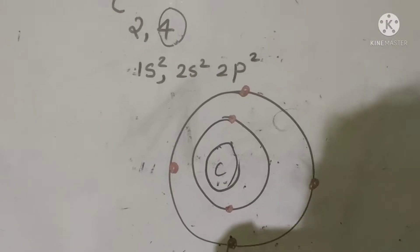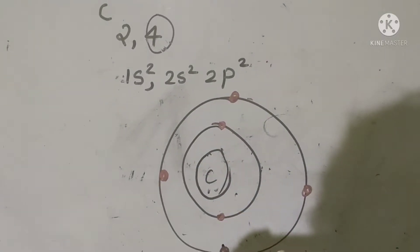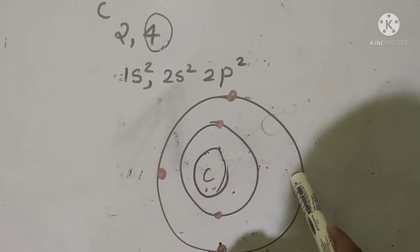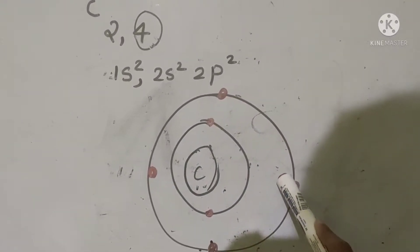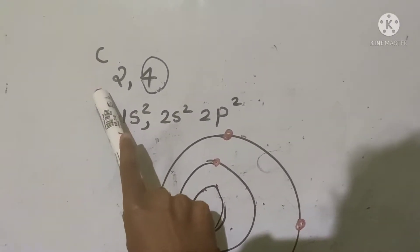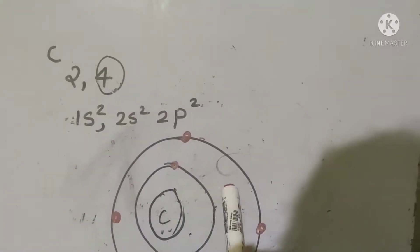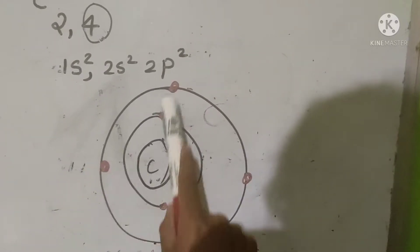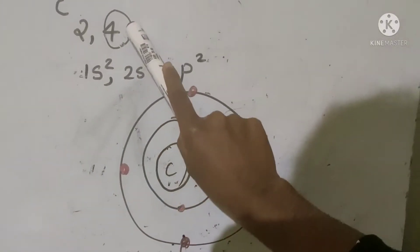What is meant by valence shell and valence electrons? The electrons present in the outermost shell are called valence electrons, and the outermost shell is known as the valence shell. For example, carbon has atomic number 6 with electronic configuration 2, 4. Its outermost shell contains 4 electrons, so the valence electrons of carbon is 4, and the valence shell of carbon contains 4 valence electrons.